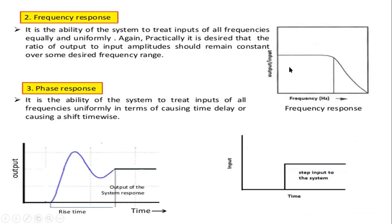For frequency response, frequency is on the x-axis and the output-to-input ratio is on the y-axis. It is the ability of the system to treat inputs of all frequencies equally and uniformly. It is desired that the ratio of output to input amplitude remains constant over some desired frequency range — this is called frequency response.